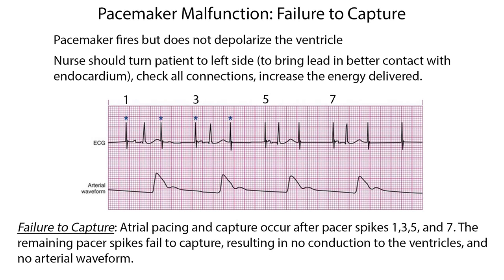In failure to capture, the pacemaker fires but does not depolarize the ventricle. The nurse should turn the patient to the left side to bring the lead in better contact with the endocardium, and check all connections and increase the energy delivered. In the example, atrial pacing and capture occur after pacer spikes 1, 3, 5, and 7, while the remaining pacer spikes fail to capture, resulting in no conduction to the ventricles and no arterial waveform.